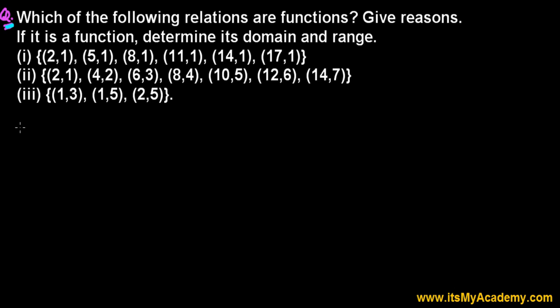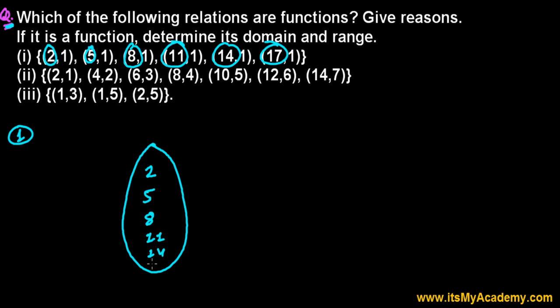Let's do the first one. As I told you, the first position of the ordered pair represents the domain. So these that I circle are domain. I'm just going to put them into a balloon. So that's 2, 5, 8, 11, 14, give a little more space, 17.